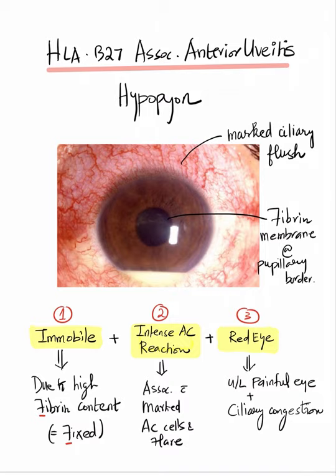Contrasting with HLA-B27 associated uveitis, where the hypopyon is immobile due to high fibrin content, and there is intense anterior chamber reaction as evidenced by the fibrinous membrane at the pupillary border. It occurs in a severely painful acute red eye, as evidenced by the marked ciliary flush. It is very important to differentiate these two contrasting etiologies and their contrasting hypopyons.